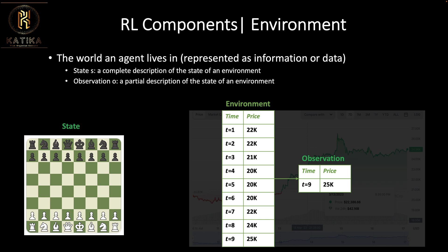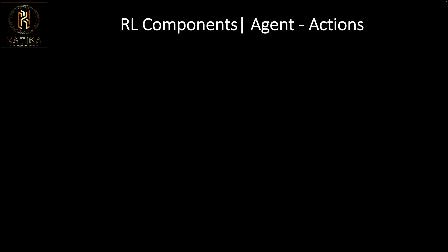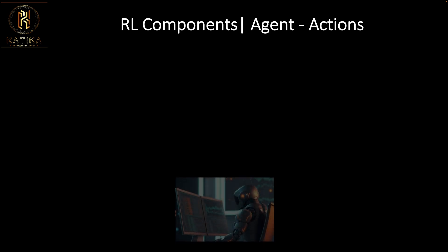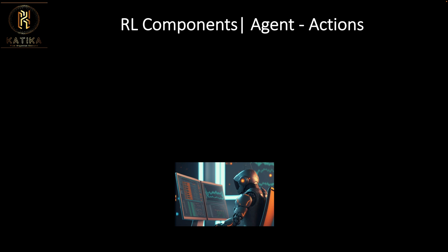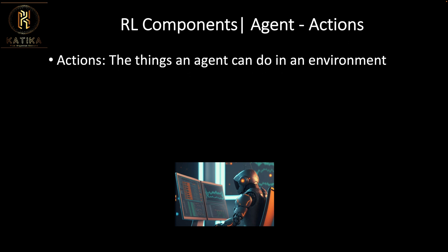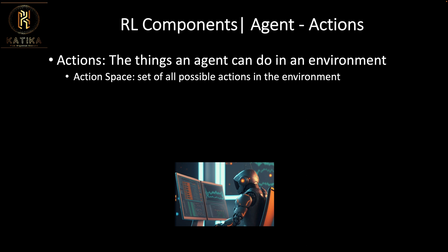So in an environment we have a state and we have an observation. Moving forward, another key component in reinforcement learning is the agent. The agent is the entity that makes decisions — it's the one that wants to learn how to make decisions. In an environment, there are certain things an agent can do, and those are called actions. We have an action space, which is the set of all possible actions an agent can take.